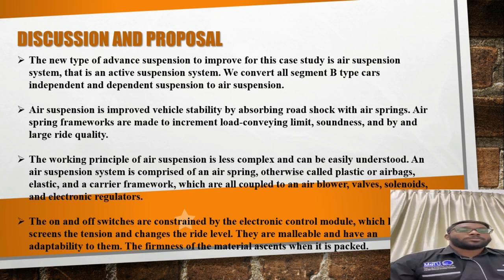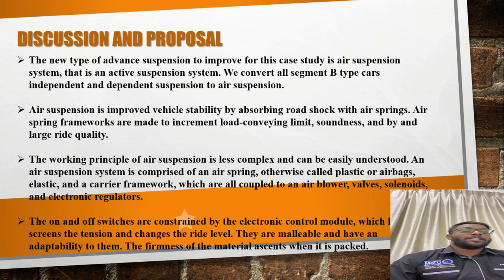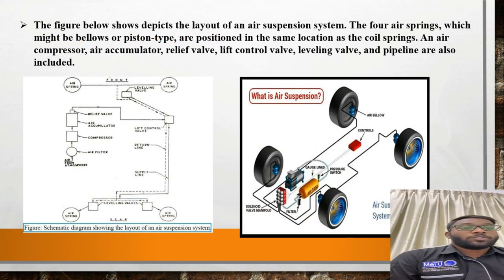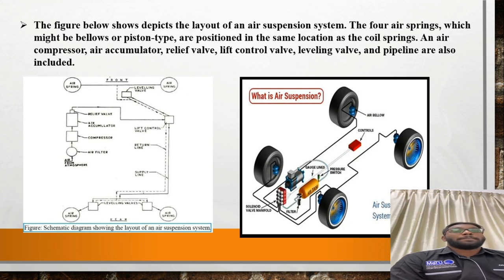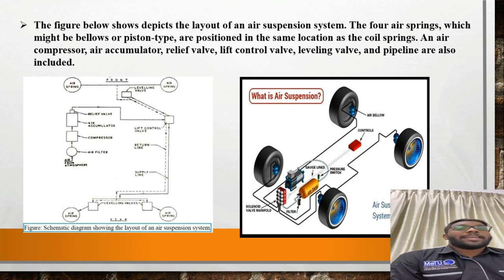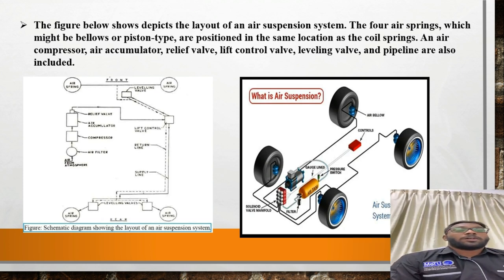The on and off switching is controlled by electronic control modules which monitor the sensors and adjust the ride level. The figure below shows the layout of the air suspension system. The four air suspension springs are made via blow-molded piston type and positioned at the same location as the coil springs. Compressed air is also included in the air suspension system. The two pictures below show the type of air suspension system in diagram form.